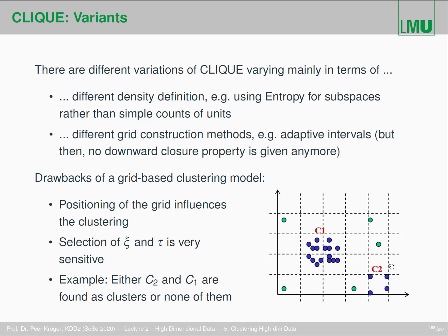Here is an example where the positioning of the grid is not perfect. In order to find this cluster, you need to apply a threshold of tau at maximum four. If you set it to five, all those grid cells are not dense anymore, so you won't find this cluster. But then you will also find another isolated one as a cluster, which is probably not what you want. You can do some post-processing, but that is an additional round and typically not desirable.